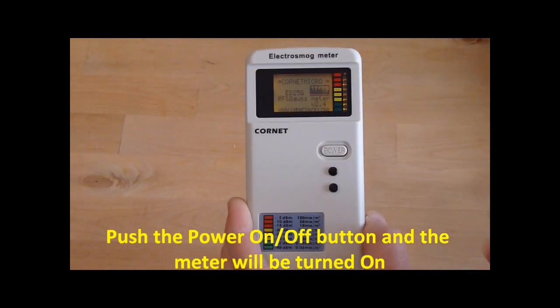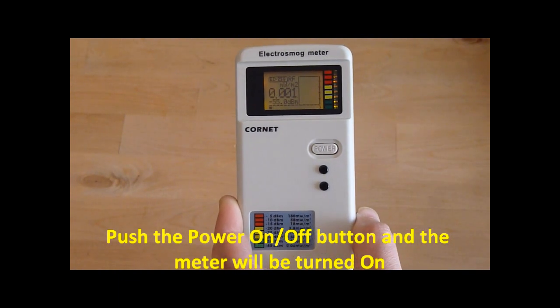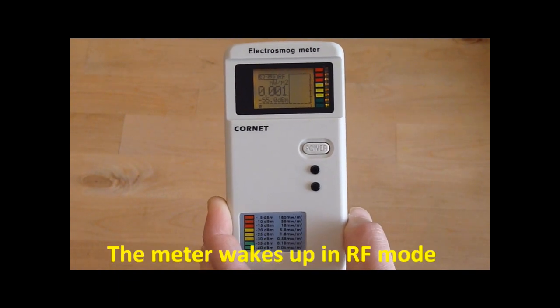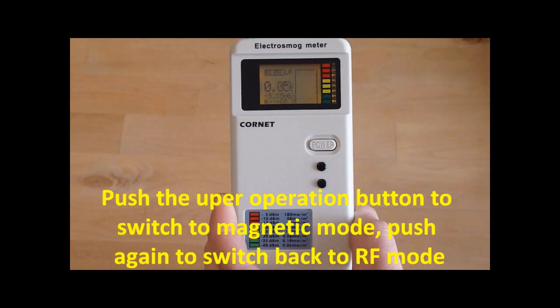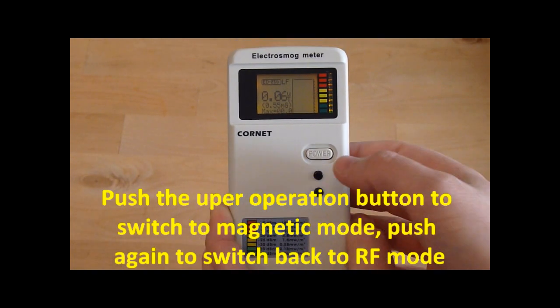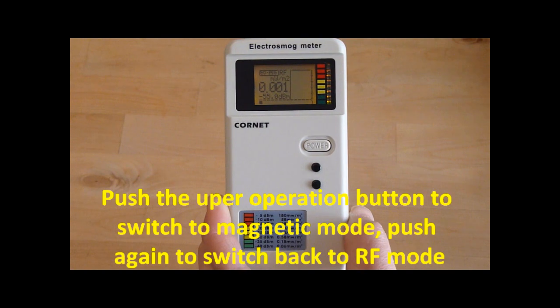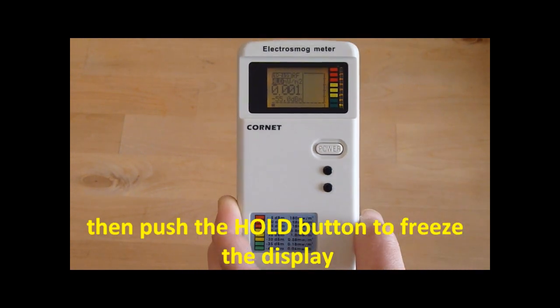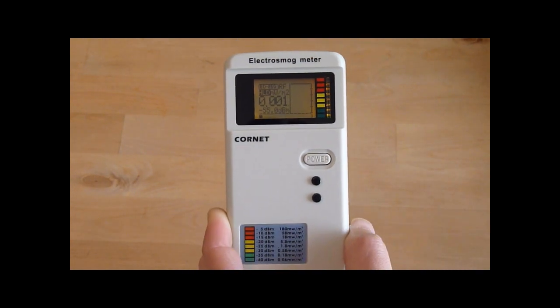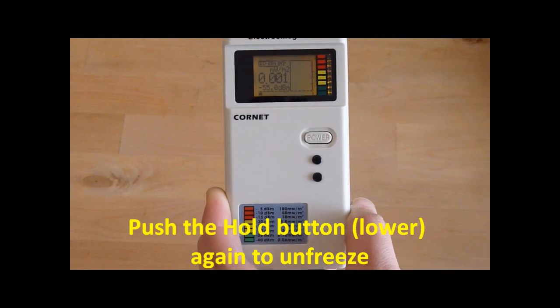Push the power on-off button and the meter will be turned on. The meter wakes up in RF mode. Push the upper operation button to switch to magnetic mode. Push again to switch back to RF mode. Push the hold button to freeze the display. Push the hold button again to unfreeze.